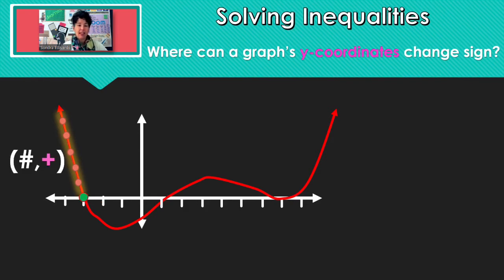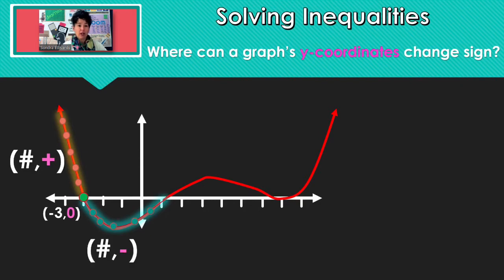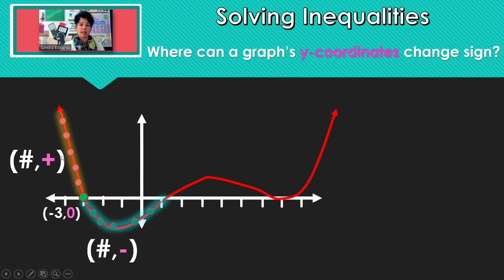Here at the x-intercept, the y part is zero. Then continuing along to the right, all of those points, the y part of the coordinate would be negative. So before this first x-intercept, the y of the coordinate was positive.